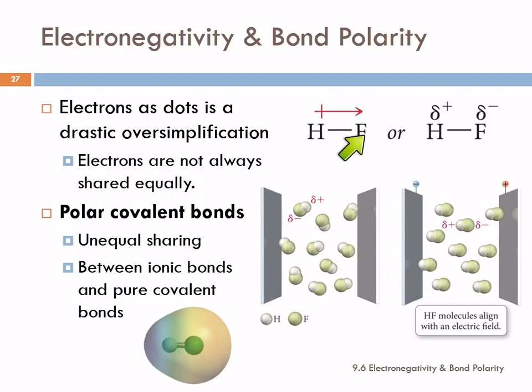Another way we represent this is with an arrow. The arrow points towards the more negative end, and then we add a little plus sign on the other side. I think of this as like being the helpful neighbor — dad comes home from work and asks where those boys are, and the neighbor points and says they're over there. So the arrow is pointing to the side where the electrons spend more time.